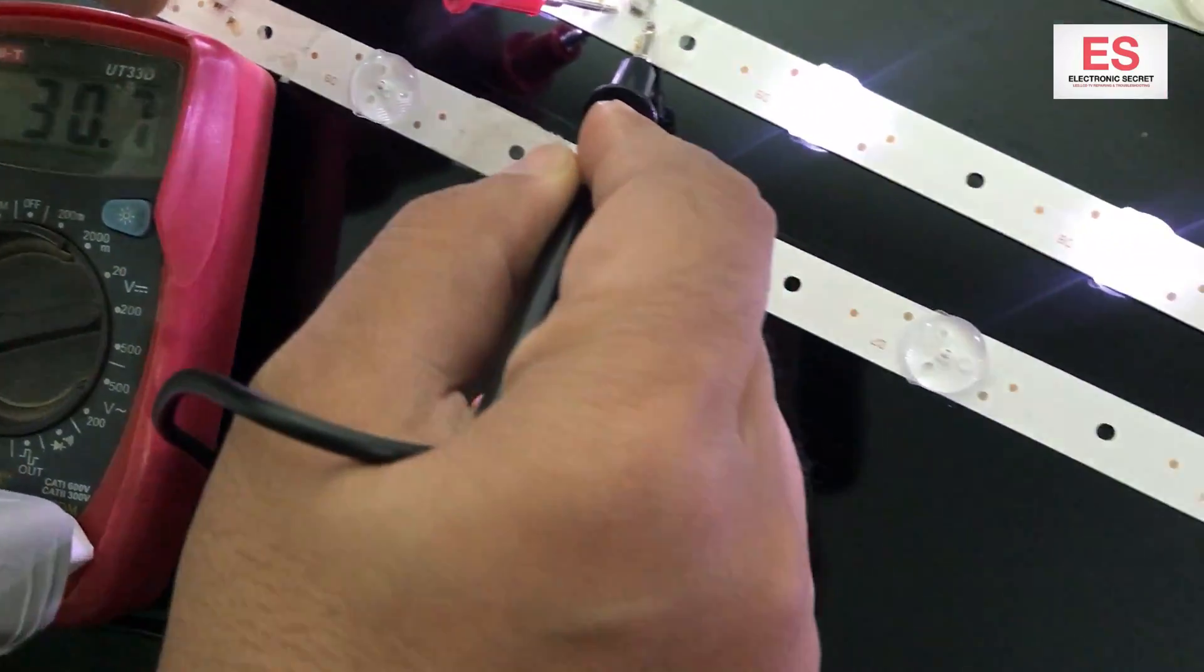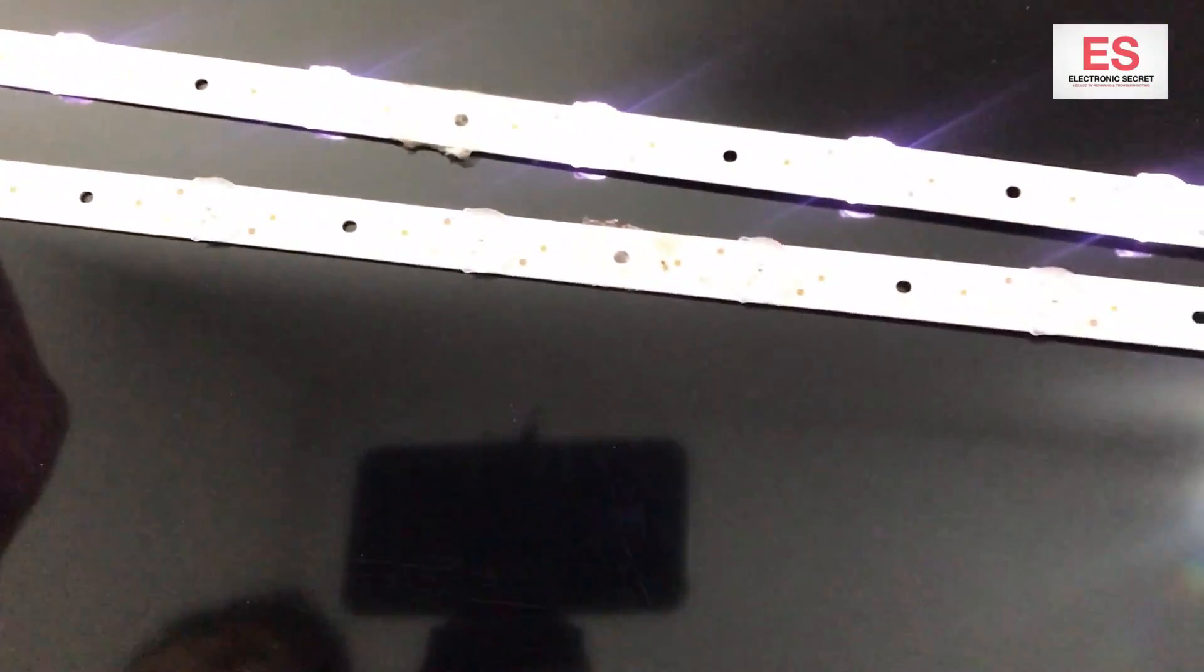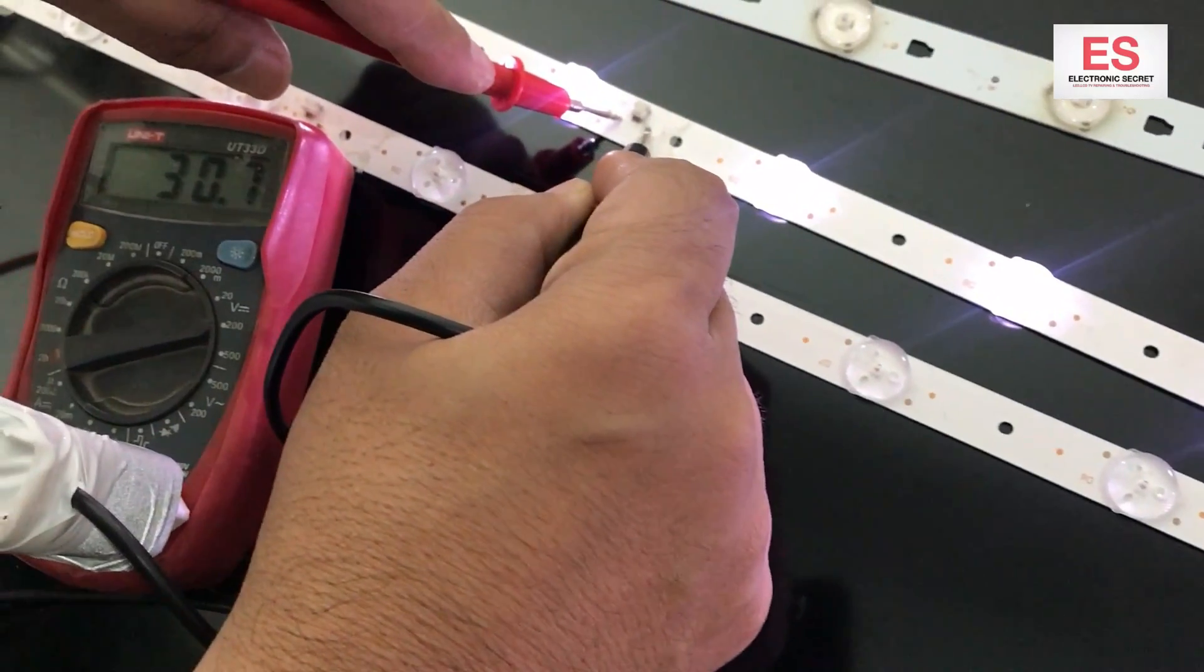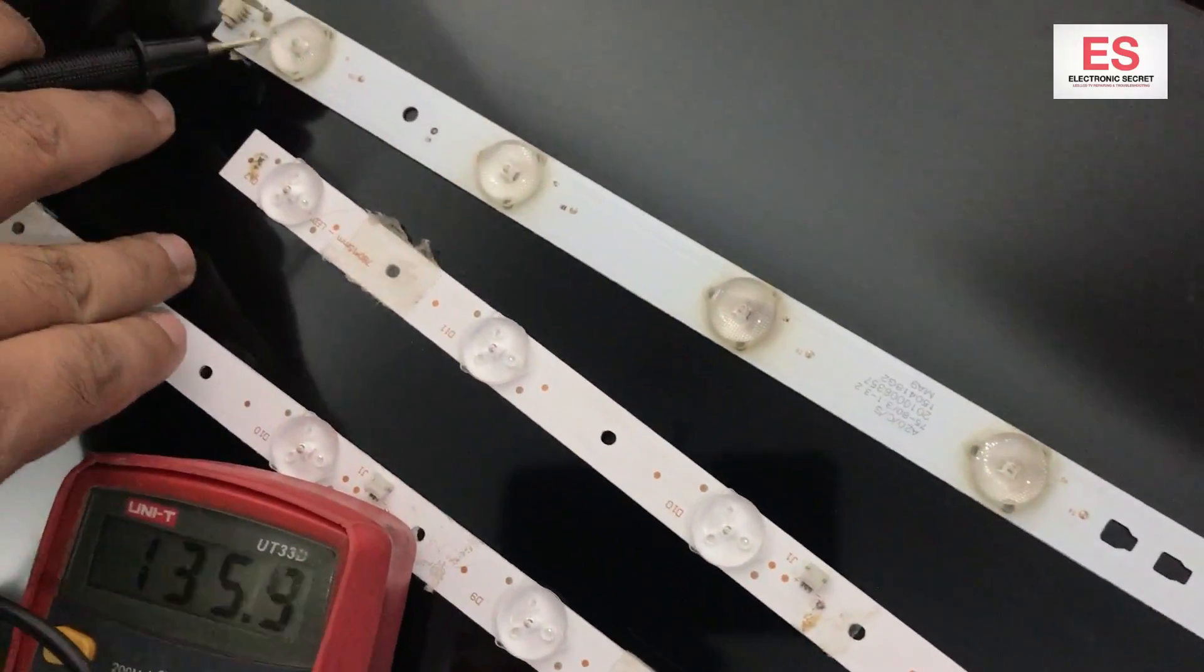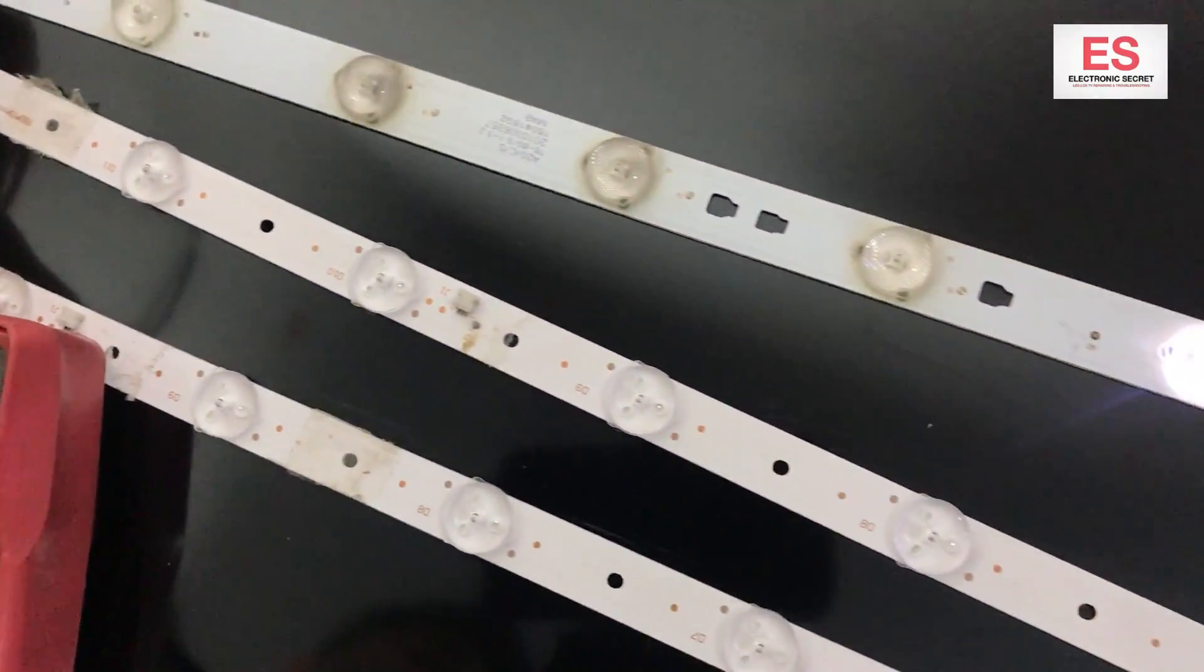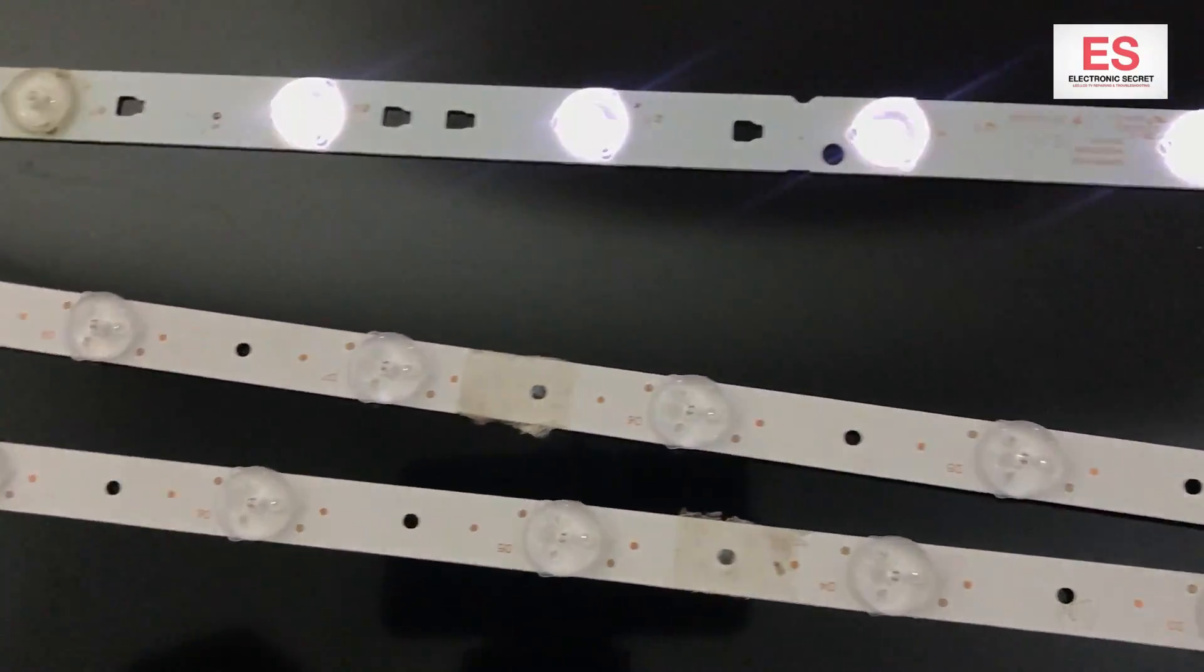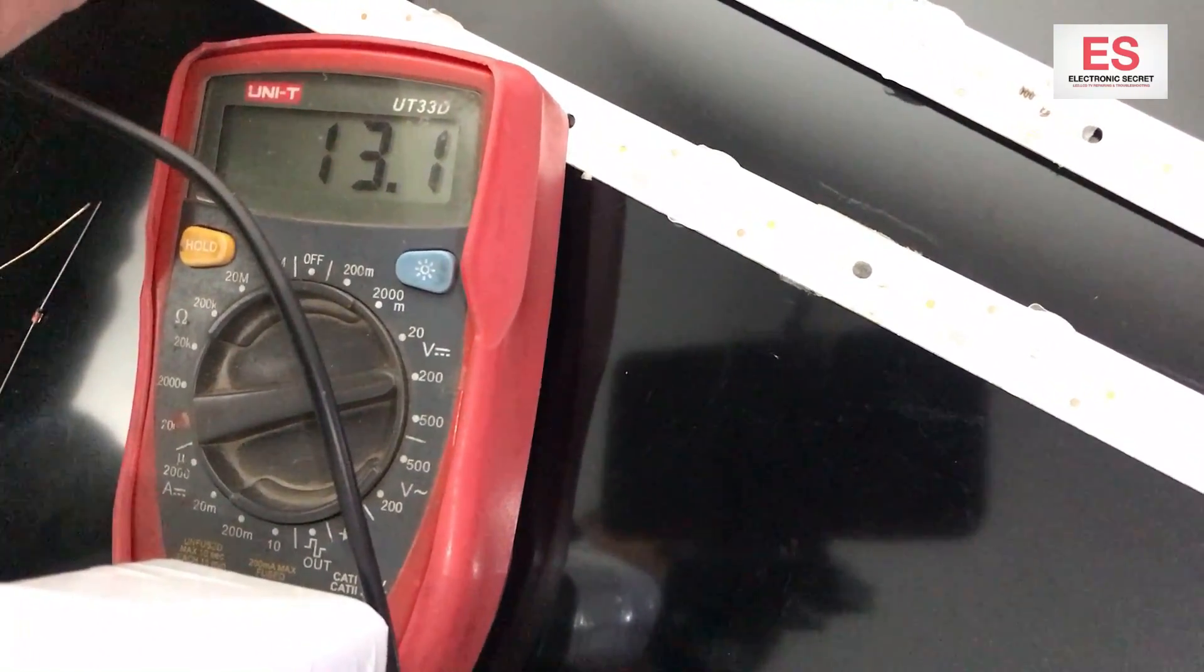You can check the bad ones and the good ones with this, so no problem. Now I will check again a faulty backlight. Five bulbs are glowing and four are not, and the voltage showing is 13 volts as the bulbs are in series.